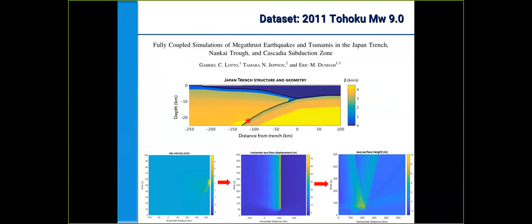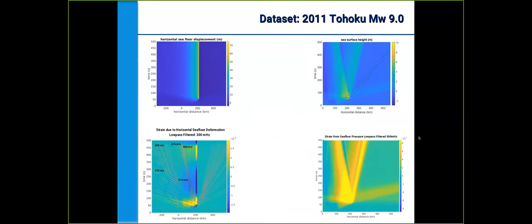The data provided for the Tohoku magnitude 9 earthquake and tsunami was provided by the group at Stanford from Eric Dunham. The data includes the nucleation of the earthquake, propagation of waves, as well as the water column displacement. We see the slip velocity incrementing at about 50 seconds, which corresponds to the horizontal seafloor displacement and the eventual sea surface height variations. We clearly see two beams that are the propagating tsunami heights. From the seafloor displacement data, we're able to calculate strains due to the seafloor deformation.